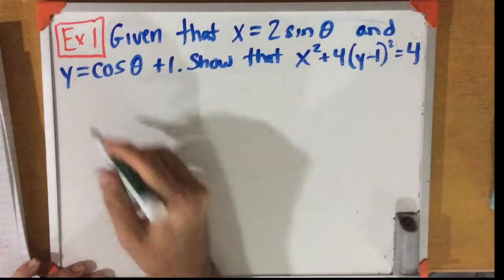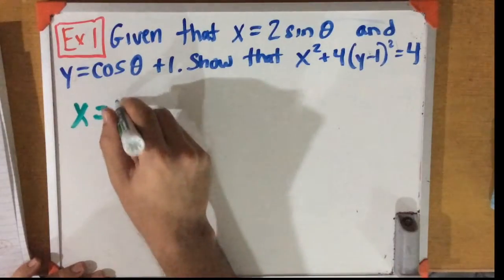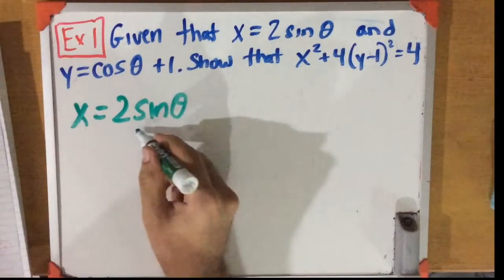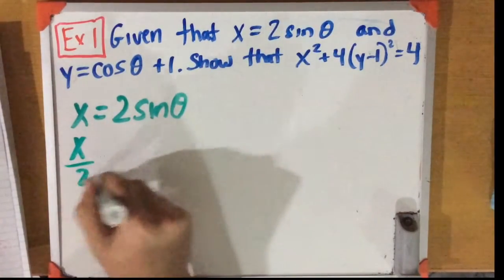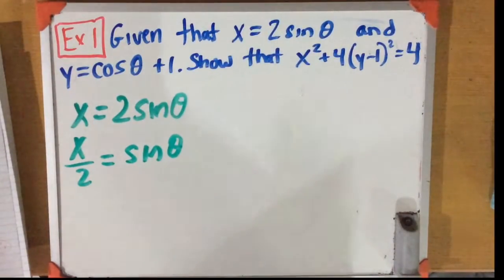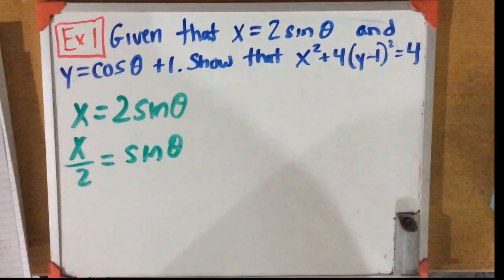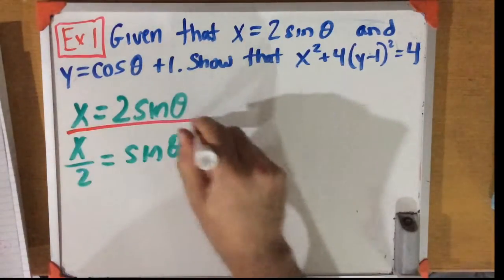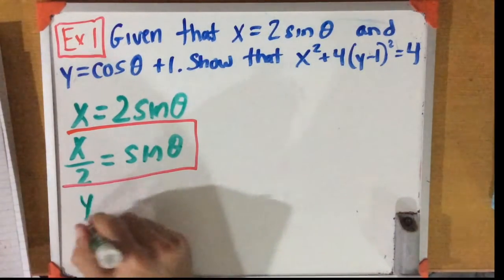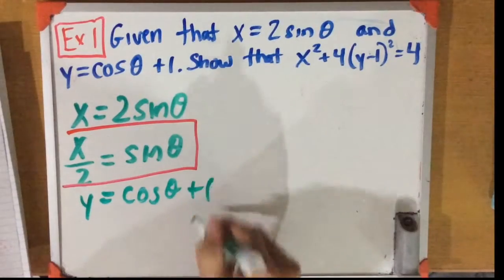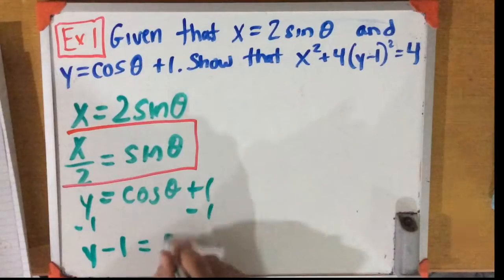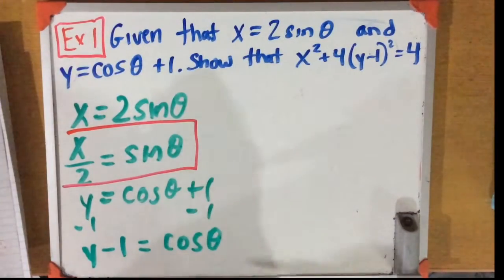Let's go ahead and do that. We have x is equal to 2 sine theta, and let's figure out what sine theta actually is. Dividing both sides by 2, sine theta ends up being x over 2. Now let's figure out what cosine theta is. From y is equal to cosine theta plus 1, subtracting 1 from both sides, cosine theta is equal to y minus 1.